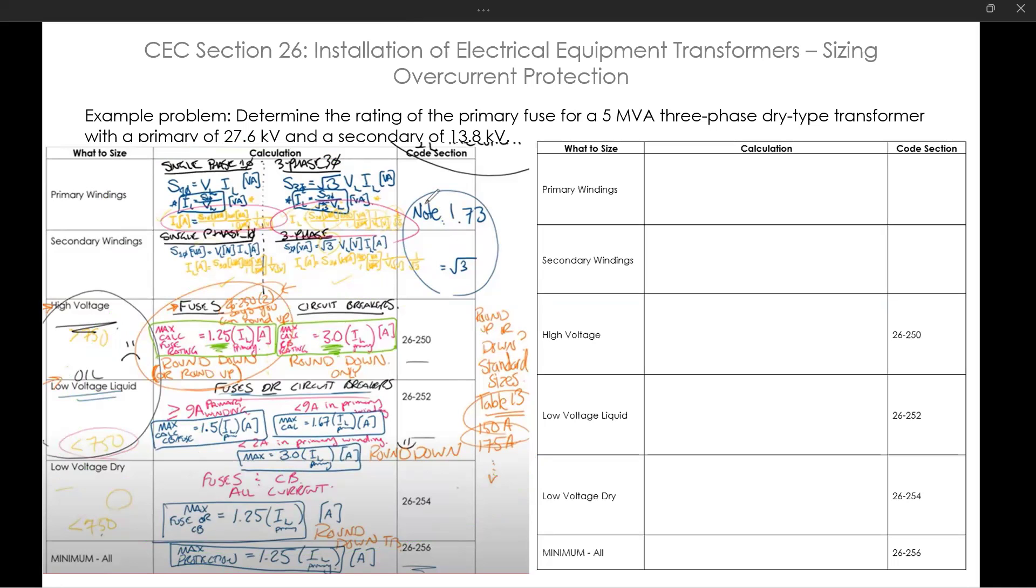Example: determine the rating of the primary fuse for a five megawatt amp three phase dry type transformer with a primary of 27.6 kilovolts and a secondary of 13.8 kilovolts. So it's going to be a fuse, we have to take that from the question. And it's three phase.